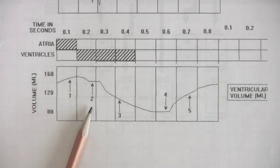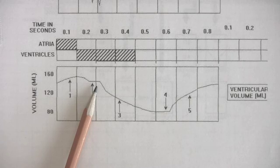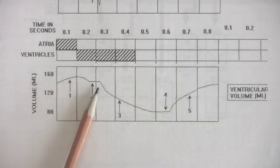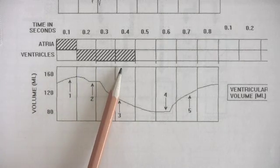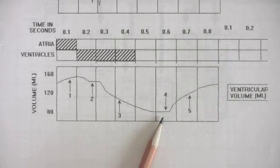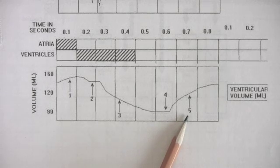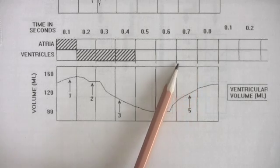The phase in which there's no change in ventricular volume, indicated by number two, is due to the period of time during which the AV valves and the semilunar valves are closed, so no blood flows in or out of the ventricles. The sharp drop in ventricular volume is due to blood flowing out of the ventricles during ventricular systole. Number four, another period in which no change takes place, is again due to no flow in or out because the atrioventricular and the semilunar valves are closed. Finally, five represents flow into the ventricles, raising the volume occurring during ventricular diastole.